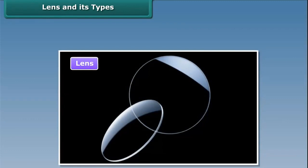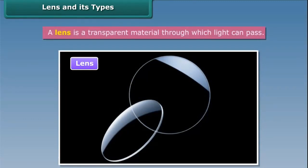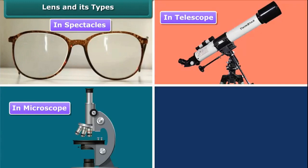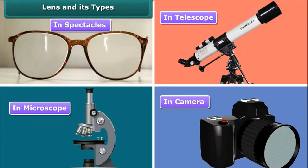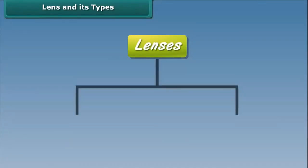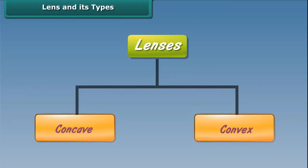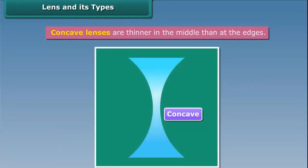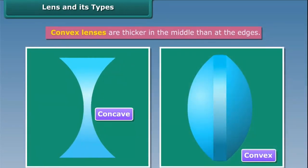Lens and its types. A lens is a transparent material through which light can pass. Lenses are widely used in spectacles, telescopes, microscopes and cameras. There are two types of lenses: concave and convex. Concave lenses are thinner in the middle than at the edges, whereas convex lenses are thicker in the middle than at the edges.